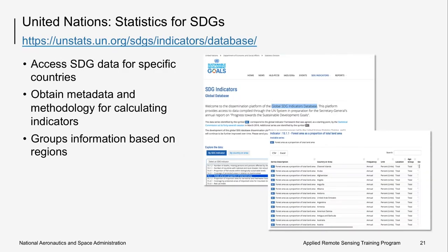The UN Statistical Commission, established in 1947, is the highest body of the global statistical system. It brings together chief statisticians from member states around the world to make decisions for international statistical activities, especially the setting of statistical standards and development of concepts and methods for implementation at national and international levels. The statistics division has a global SDG indicator database where you can select specific indicators and view different countries' data, as well as data for the world as a whole and various country groupings such as developing and developed regions.